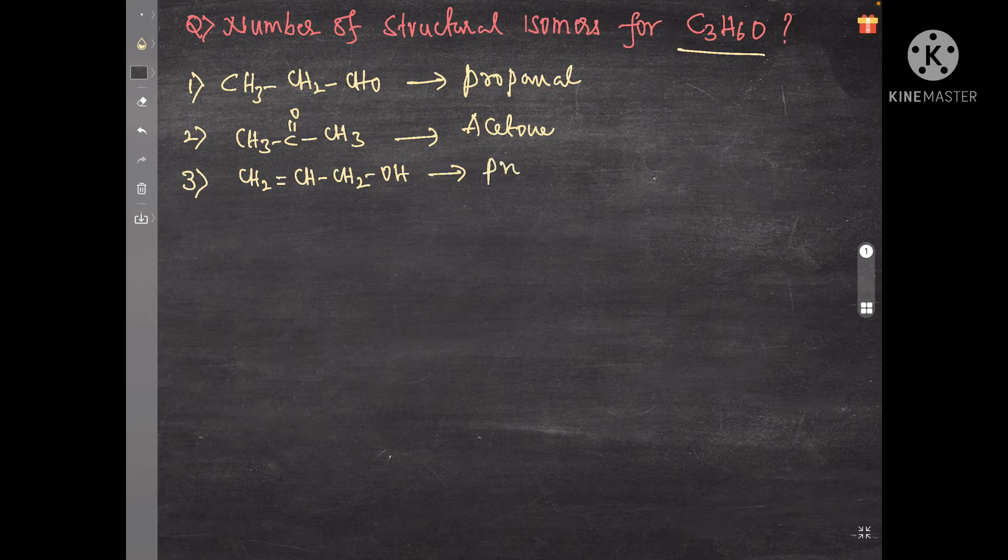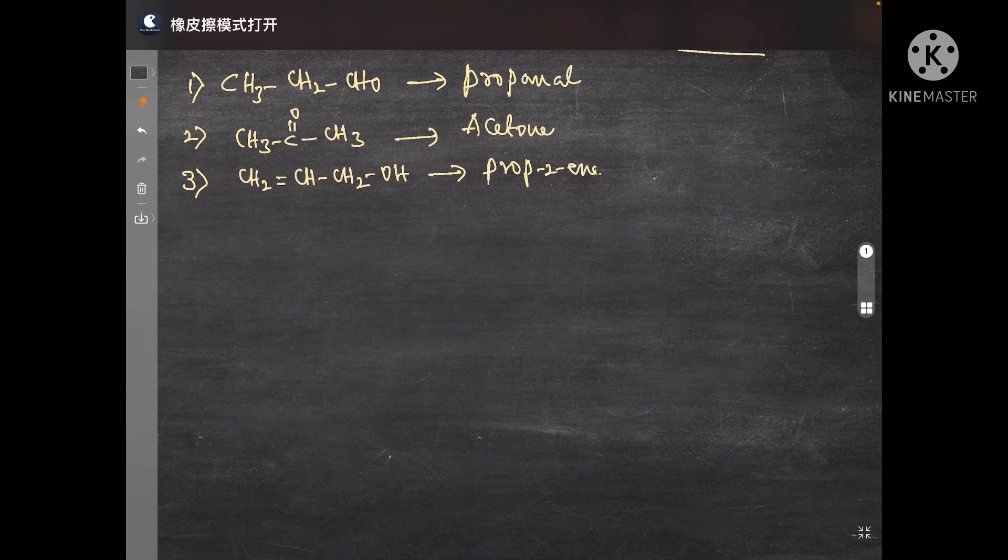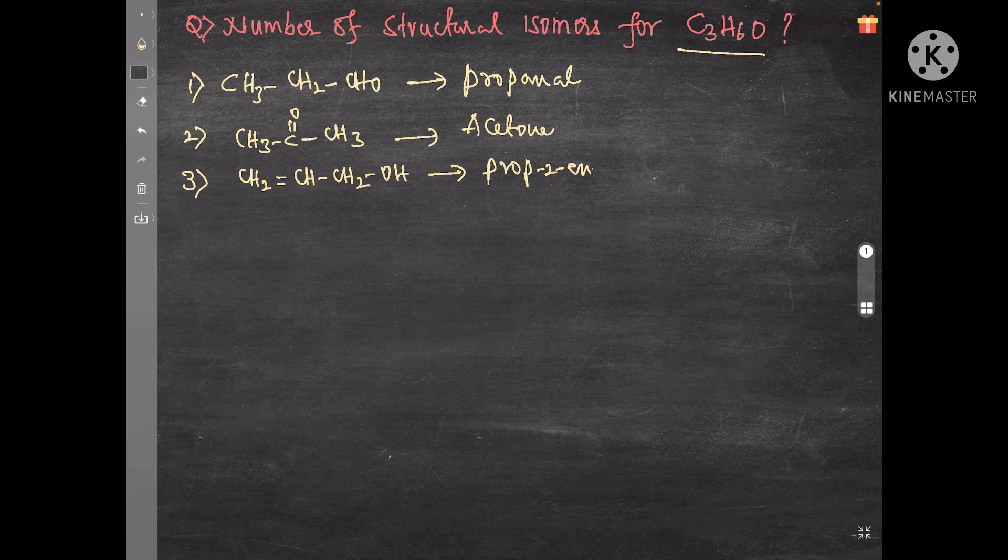prop-2-en-1-ol. Fourth one is CH3-CH=CH-OH